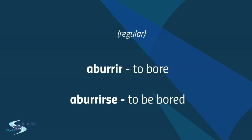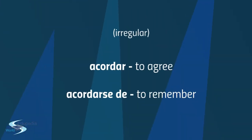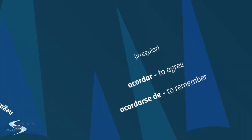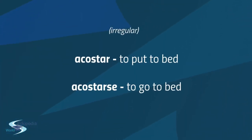Acordar means to agree, while acordarse means to remember — note this is an irregular verb. Acostar means to put to bed, while acostarse means to go to bed — also irregular. Slightly different meanings, right?